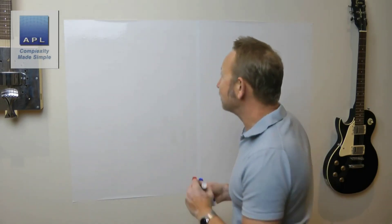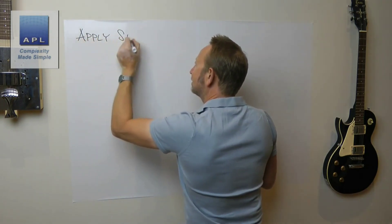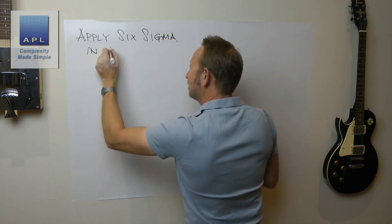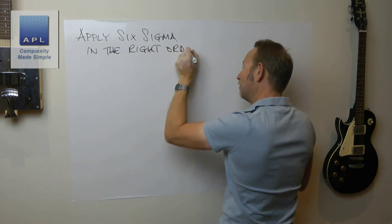Welcome to Complexity Made Simple, my name is Paul Allen. The subject of today's video: we're going to talk about the fact that you need to learn and apply Six Sigma in the right order.